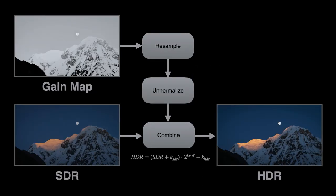Everything so far has been about how to compute and store a gain map—useful information if you're writing any app that creates HDR content, like a camera app. Now let's look at the other side: how do you use a gain map at display time? This would be useful for any app that wants to display HDR content, like an image viewer or web browser.